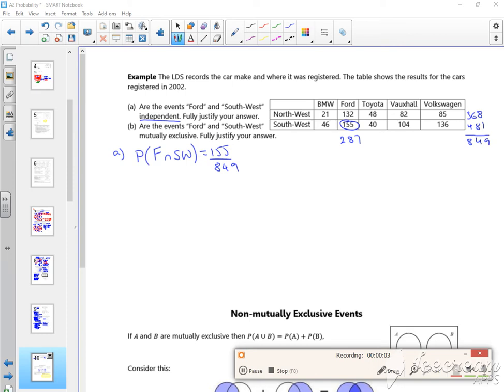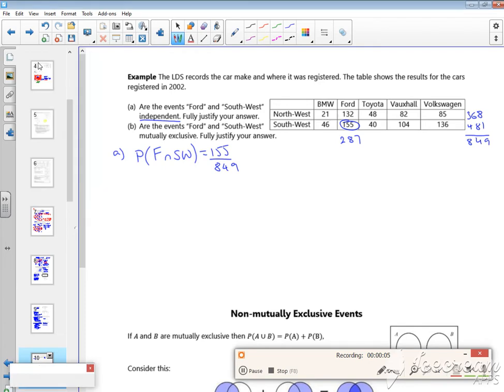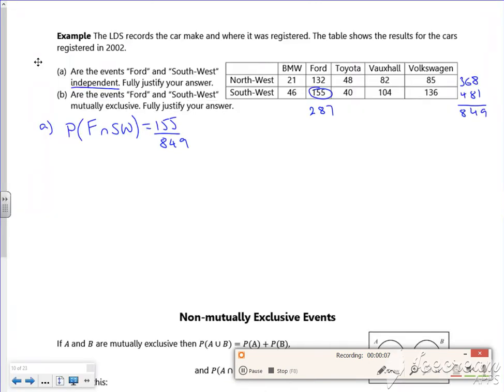So I've got Ford and Southwest from the table is 155 out of 847. Now if it's independent, then Ford times by Southwest should give me the same. So Ford is 287 out of 849.